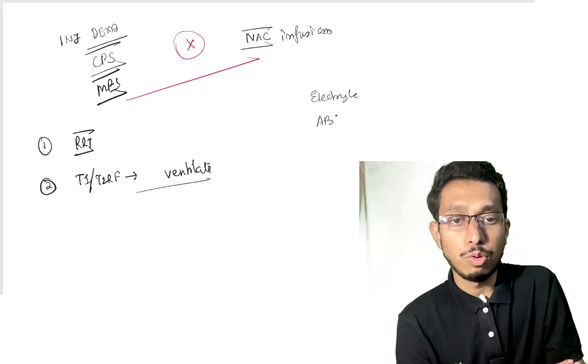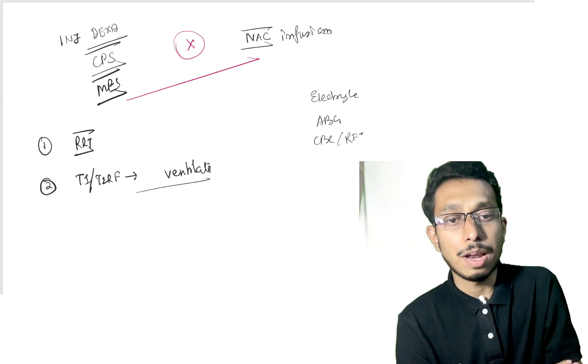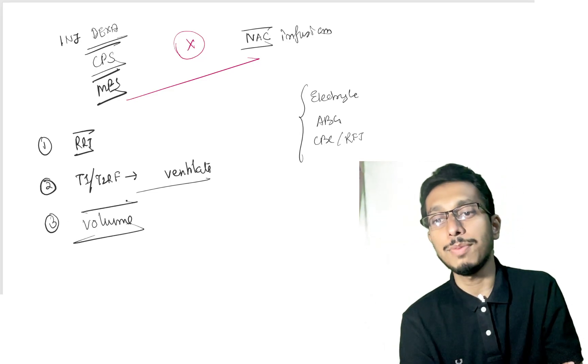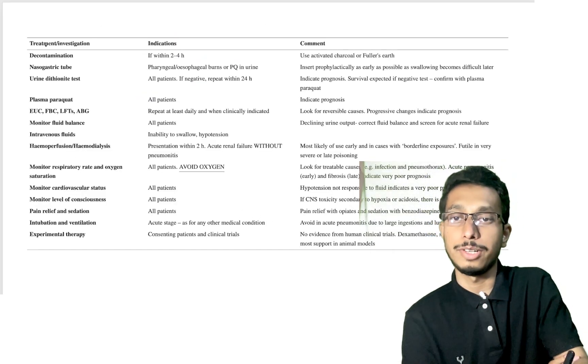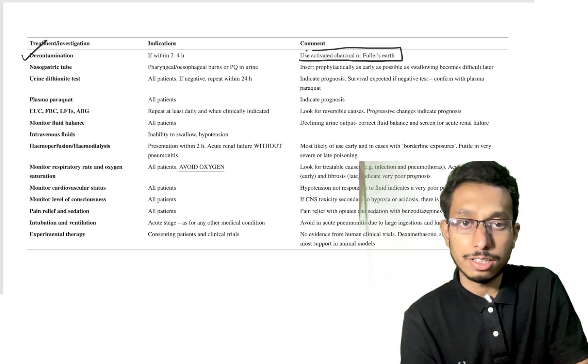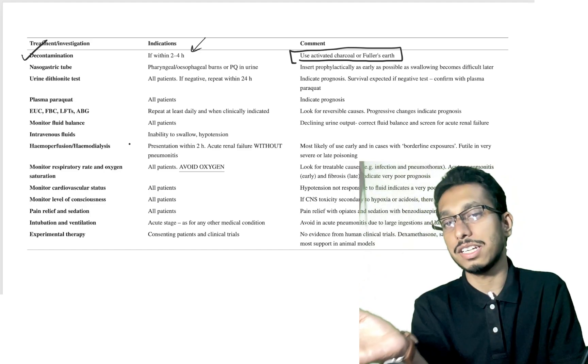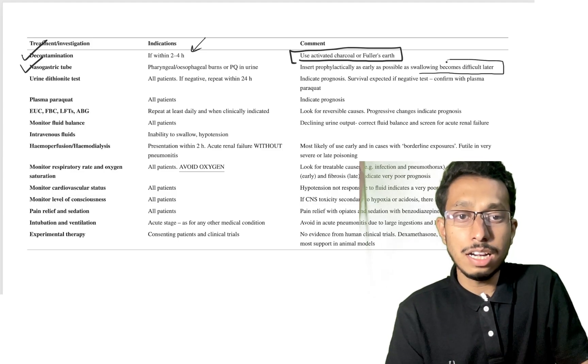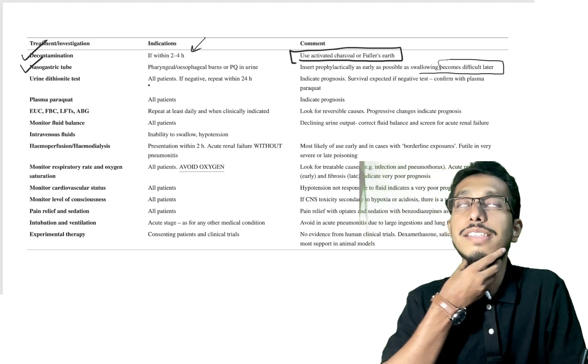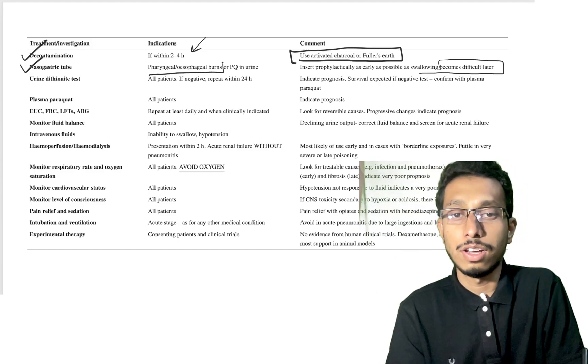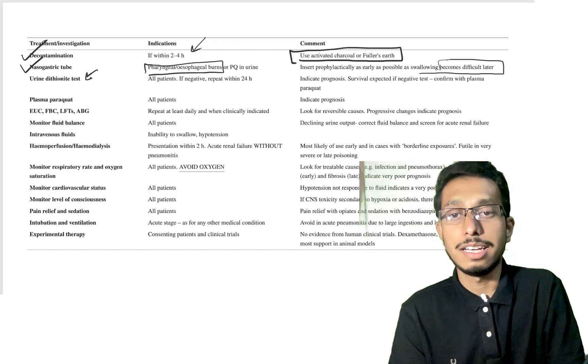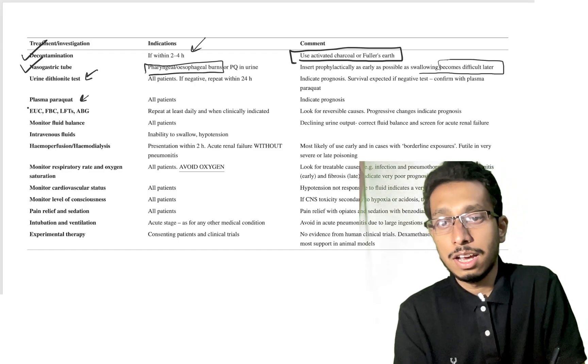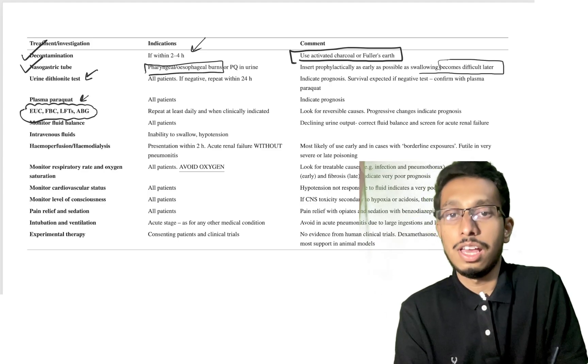If we check therapeutic options: decontamination with activated charcoal or Fuller's earth if patient arrives within 2-4 hours. NG tube indicated as early as possible, as swelling makes it difficult later. Urinary dietonate test should be done in every patient for prognostication. Plasma paraquat or dietonate levels should also be checked.